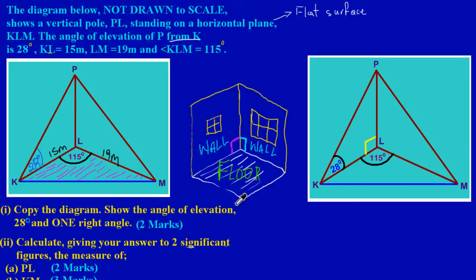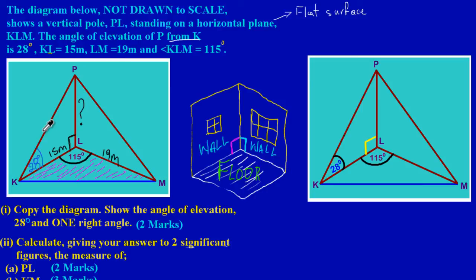Having completed that, let's move on to part two, where they're asking us to calculate — given your answer to two significant figures — the measure of PL, and that's another easy two marks. They're asking us to find the distance PL. Looking at the original diagram, they're asking us to find PL. Since we had identified that we have a right angle at L, if you look at the triangle KLP, you would have realized that's a right angle triangle.